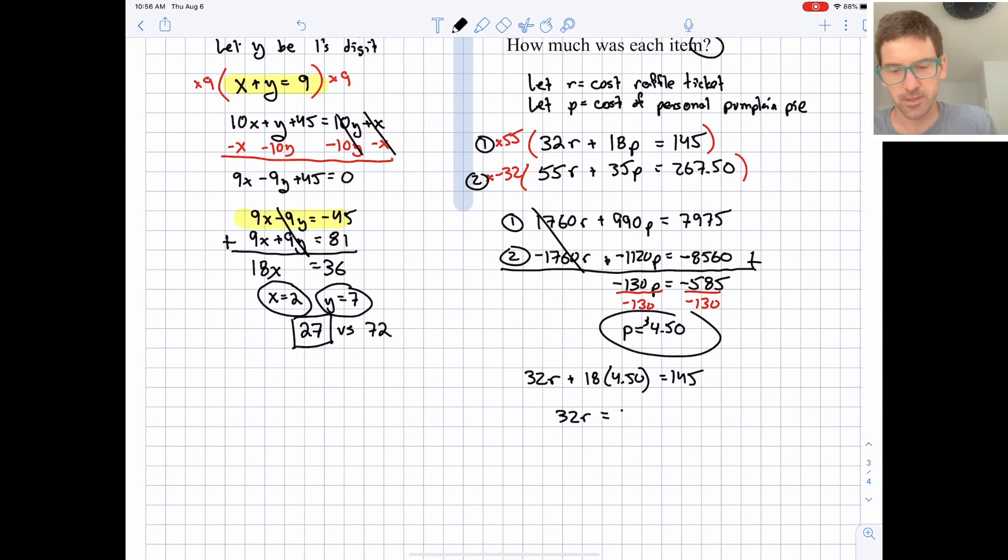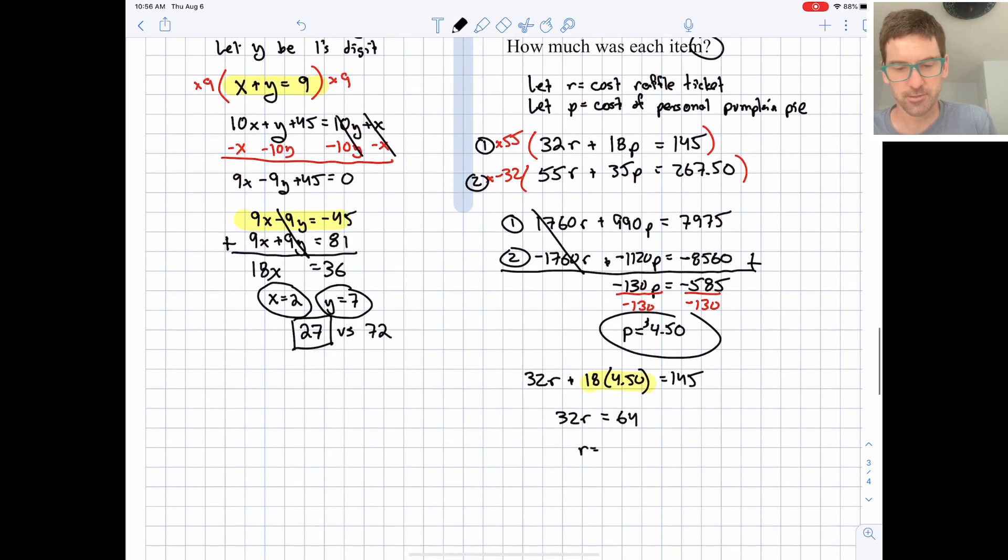So we get a 32r equals 64. So I, just to be clear, I subtracted that stuff from both sides. And r is 2. Looks like raffle tickets were $2. Cool. So those numbers seem to make real world sense. So I'm going to leave it there. That's a good place to stop.